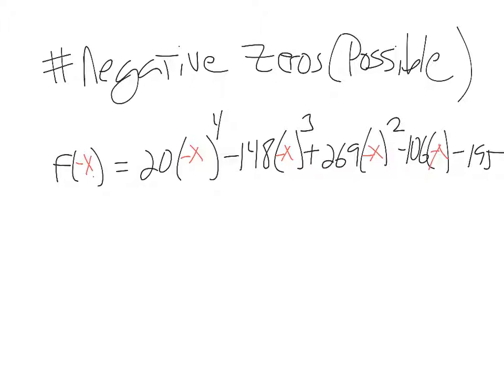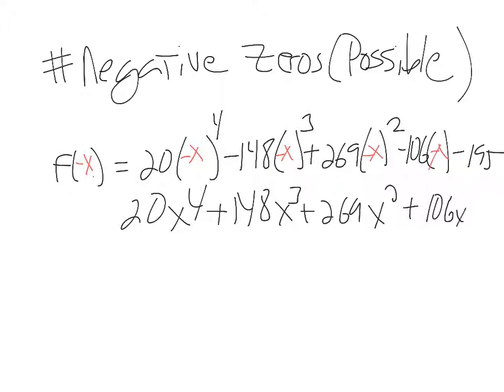What you've got to do is remember: a negative number to the fourth power is going to turn positive, but for the third power it'll stay negative, so that changes the sign of the 148. It stays positive for the x squared term, changes sign here. Then minus 195, of course that constant term doesn't change.